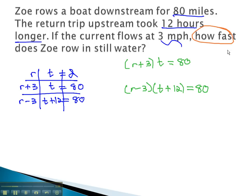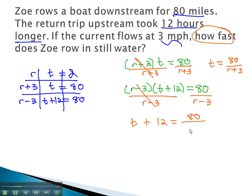We want to know how fast does Zoe row in still water, so we divide by the rate factor r plus 3 in the first equation to get time equals 80 over r plus 3, and the rate factor in the second equation, r minus 3, gives us time plus 12 equals 80 over r minus 3.